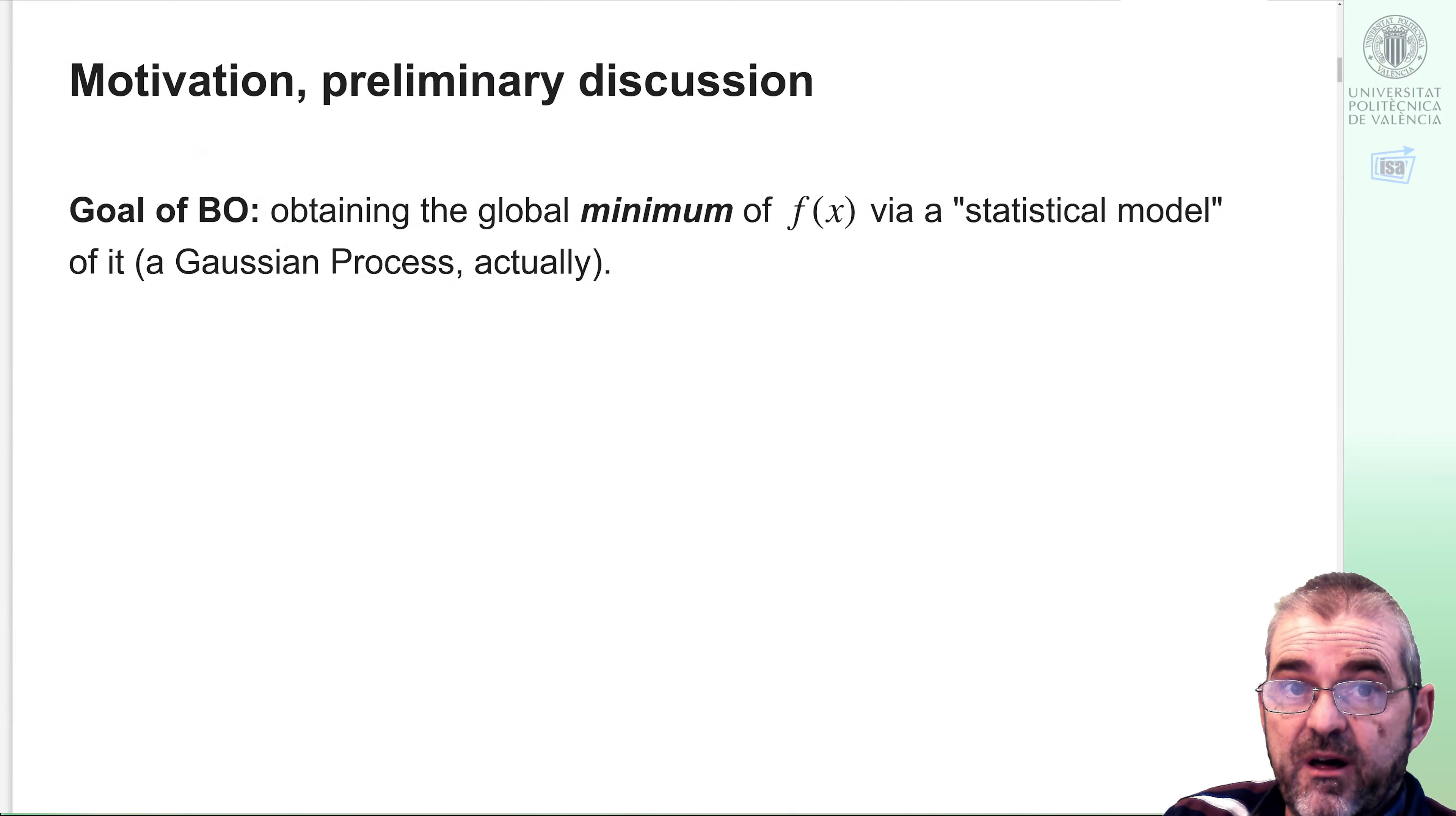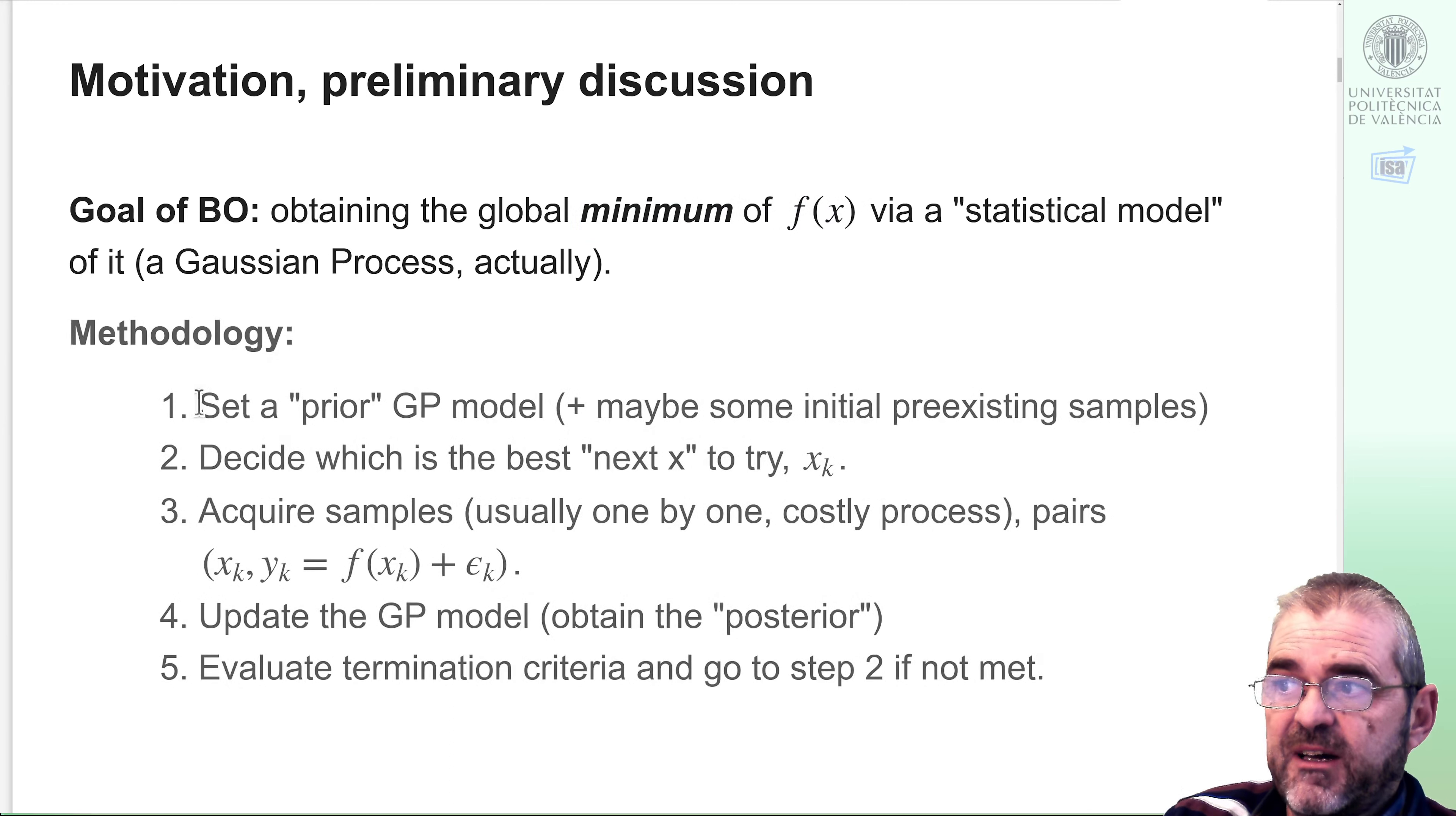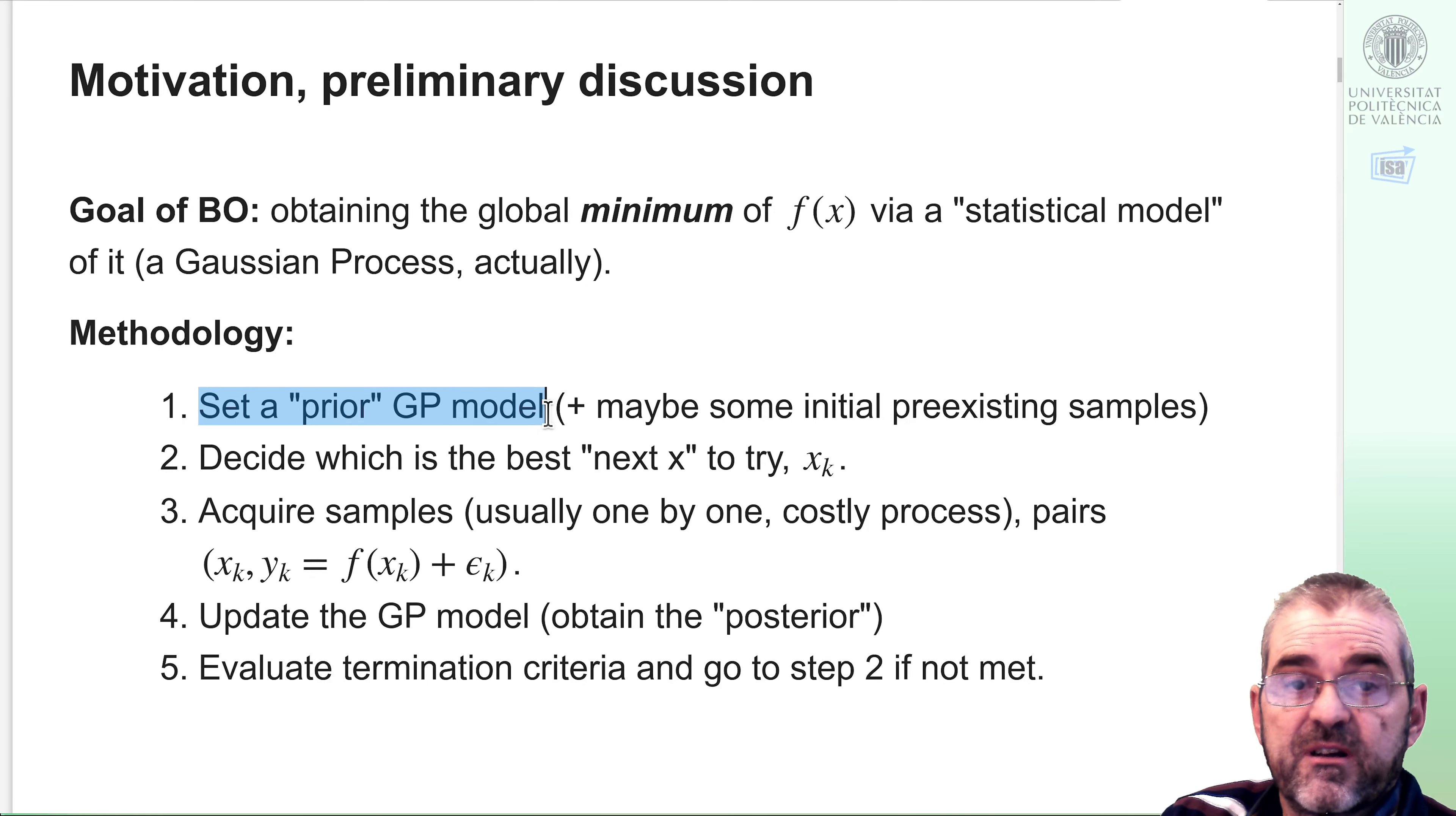If we recall the goal of Bayesian optimization, it was minimizing a function with some statistical model of it. The basic steps are setting up a prior model indicating how large are the variations of the function with respect to a given mean, and how smooth the function is assumed to be, and maybe we have some historical record of samples.